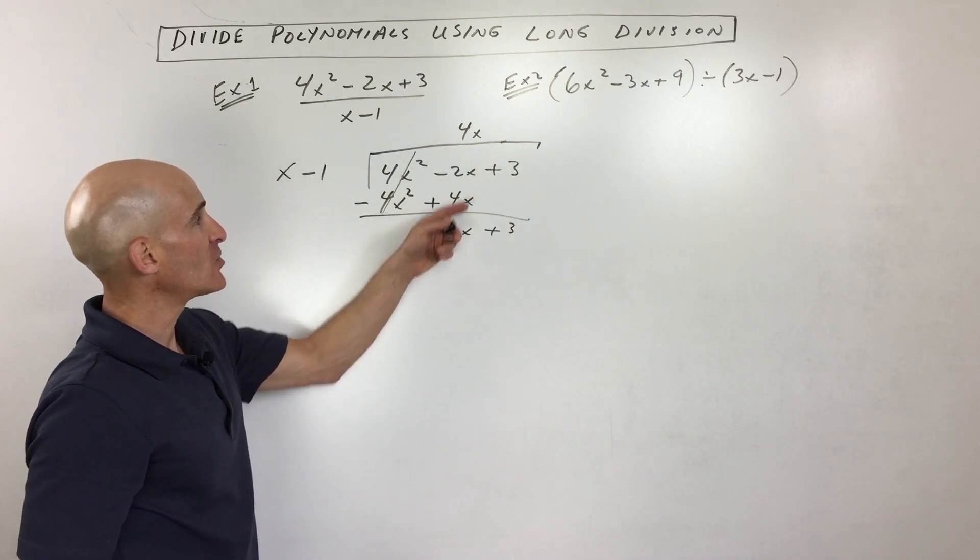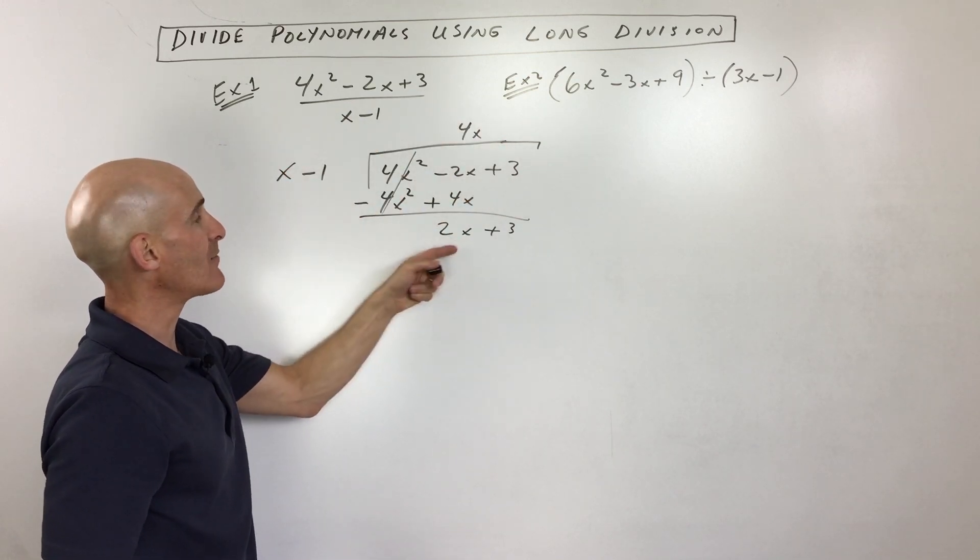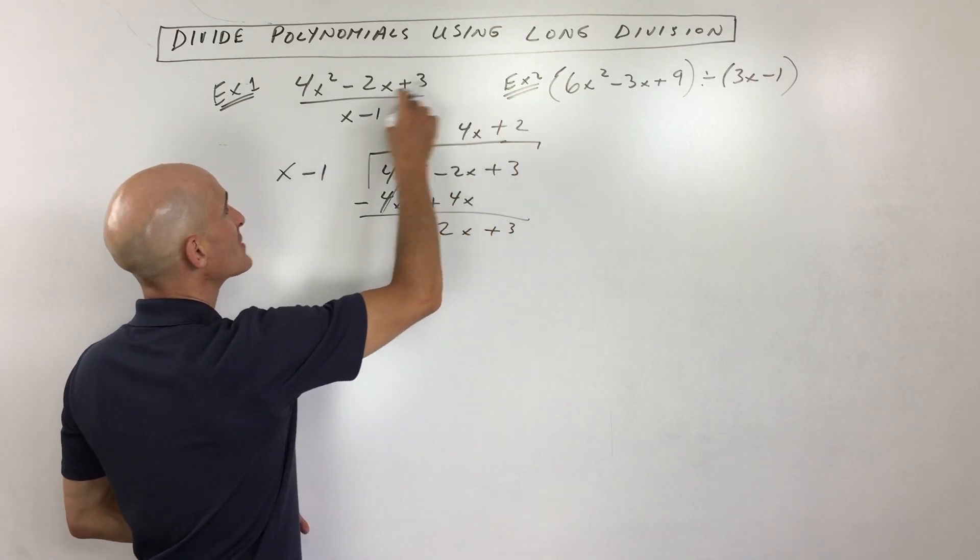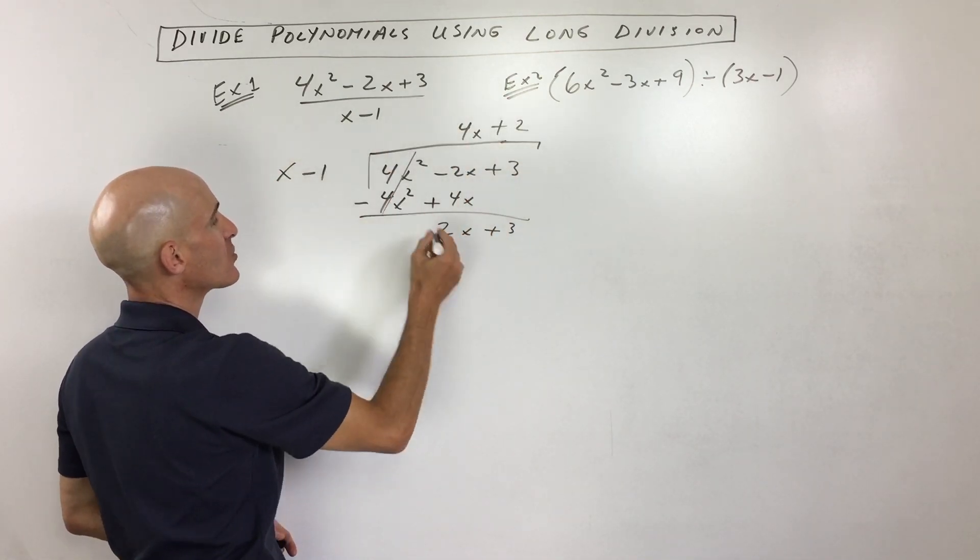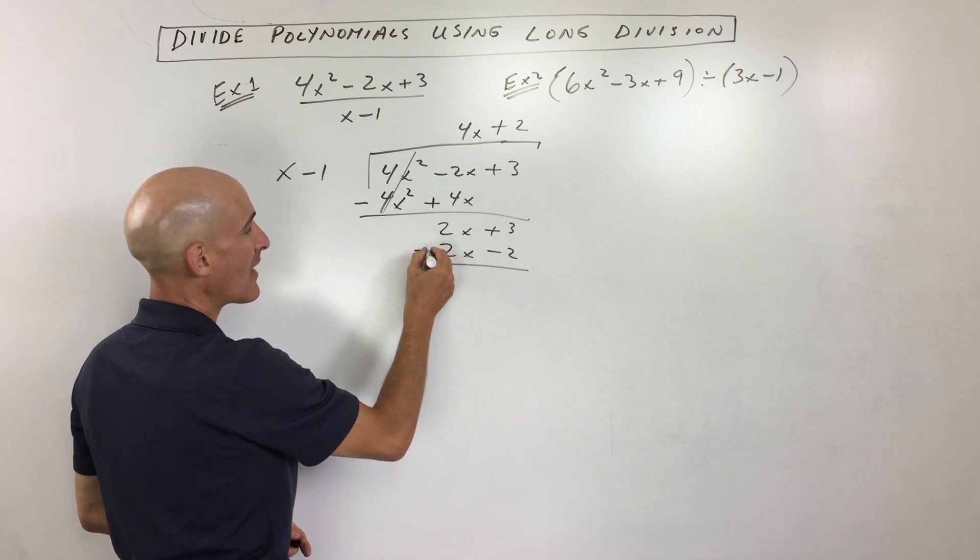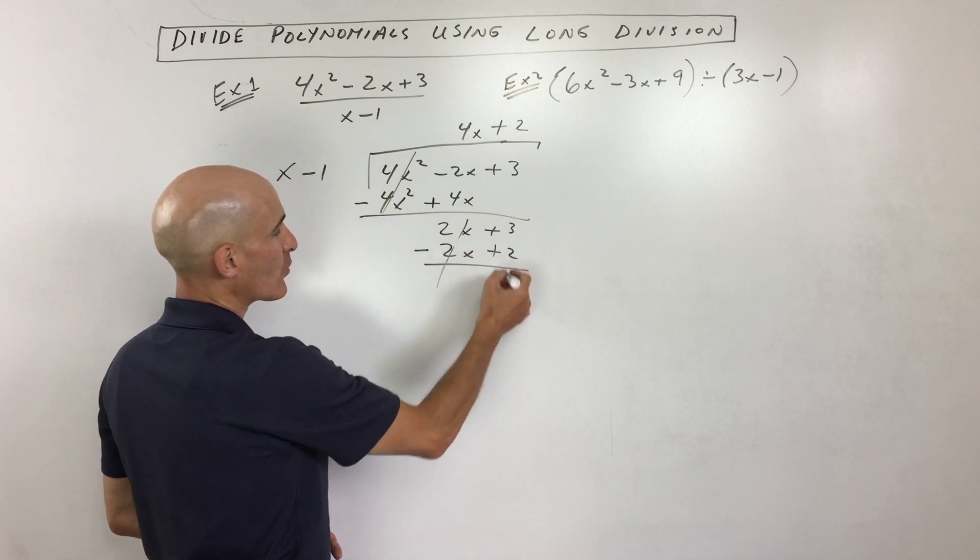Okay, now what I'm trying to do is say what times x is 2x? Or you could say what's 2x divided by x? Well, 2x divided by x is 2. And what I do is I distribute that 2 to both these terms. So that's going to be 2x minus 2. Now I subtract. What I like to do is change the signs to the opposite and add. Those cancel and we're left with 5.